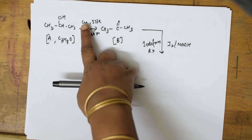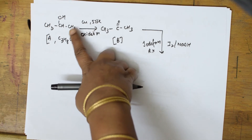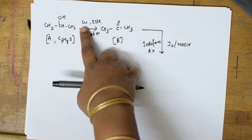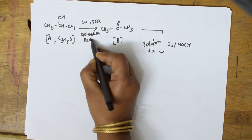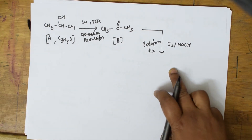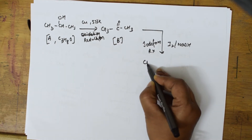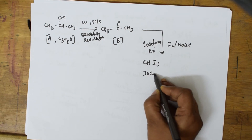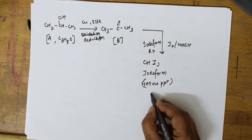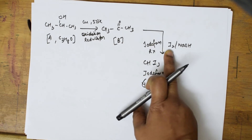Wait — copper at 573 Kelvin performs dehydrogenation, which is a reduction process, not oxidation. So the secondary alcohol is dehydrogenated by copper to give the ketone. The iodoform reaction gives a yellow precipitate: CHI3, which is iodoform. That precipitate is compound C.